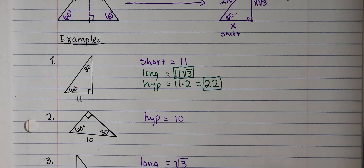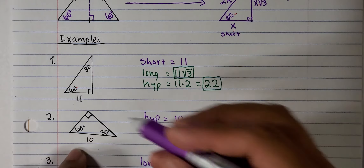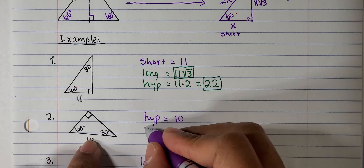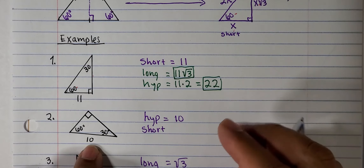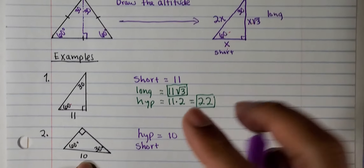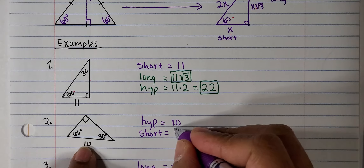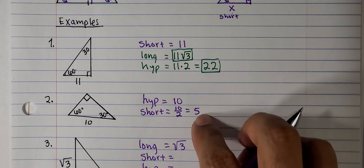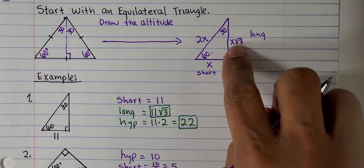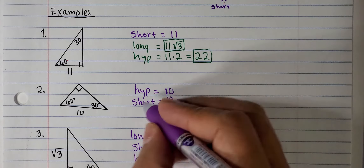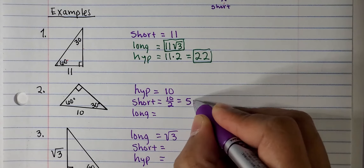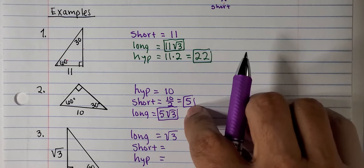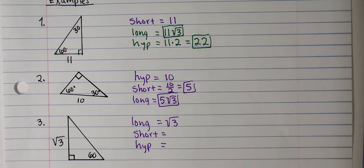In the next problem, we're given the side opposite the right angle, which is the hypotenuse, and it equals 10. Since the hypotenuse is always 2 times the short leg, to find the short leg we divide 10 by 2, giving a short leg of 5. Applying the pattern, the long leg equals 5 times the square root of 3.